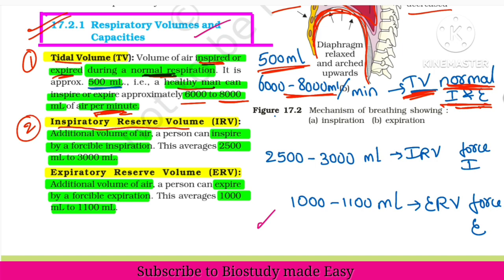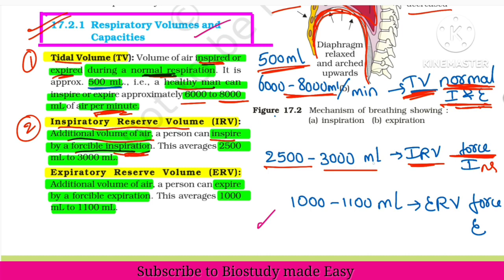Inspiratory reserve volume — this is about forceful respiration. The additional volume of air a person can inspire by forceful inspiration. During normal breathing you inhale a certain amount; beyond that, how much more you can forcefully inhale — that is inspiratory reserve volume (IRV). On average, 2500 to 3000 ml of air can be taken in by forceful inspiration.